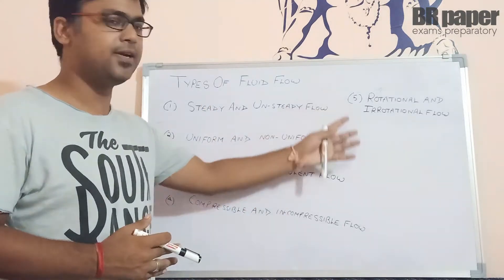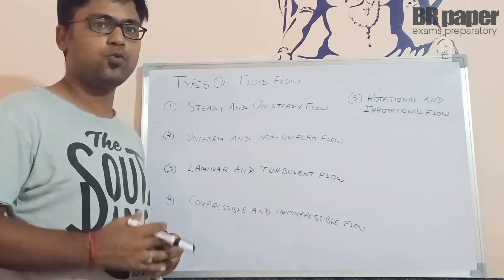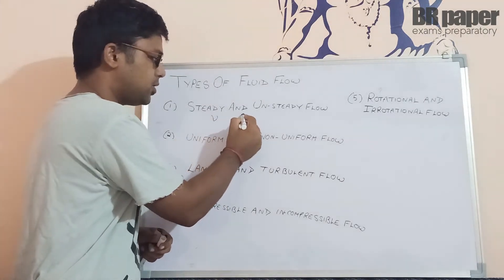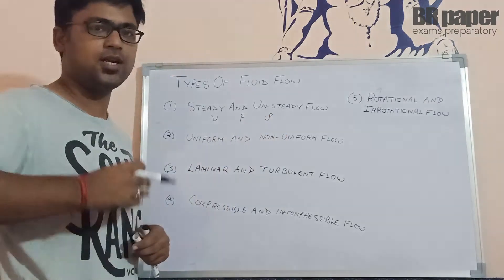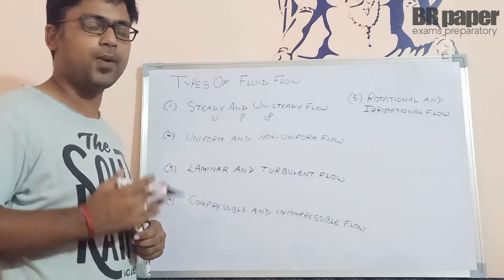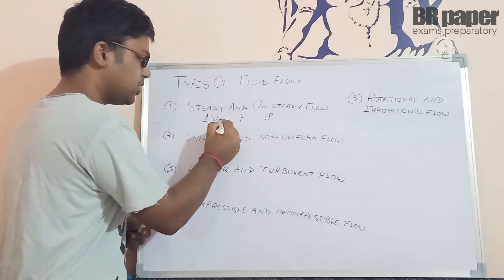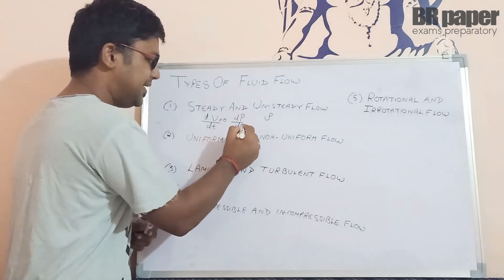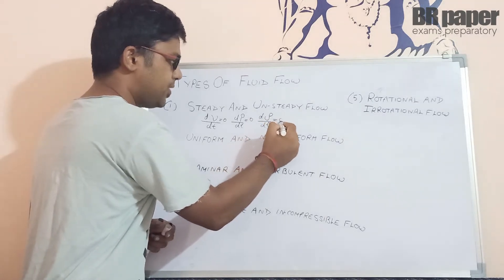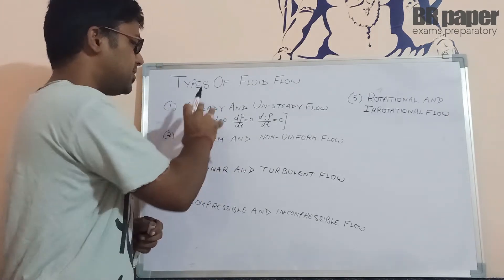We are going to discuss 5 different types of fluid flow, starting with the first one: steady and unsteady flow. When the fluid characteristics — for example velocity, pressure, and density — are not changing with respect to time, so dv/dt = 0, dρ/dt = 0, if all these properties are not changing with respect to time, then we can say it is a basic example of steady flow.